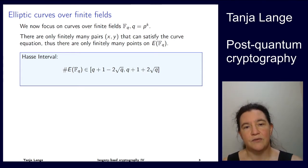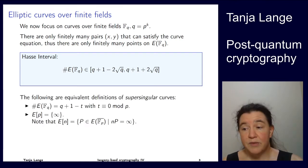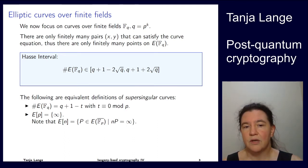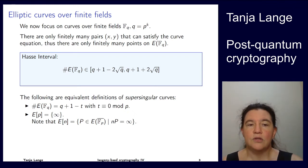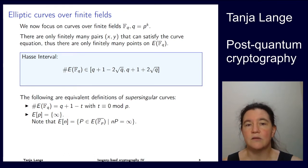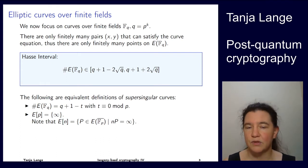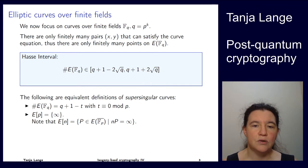Now the definition of what it means for a curve to be supersingular — that's different from singular, which we had in the first lecture with the Jacobi criterion, cusps, and nodes. Supersingular curves are elliptic curves but with very special properties. One way to define them: if you write the number of points in the Hasse interval as q + 1 − t for some t, then for a supersingular curve this t is congruent to 0 modulo p.